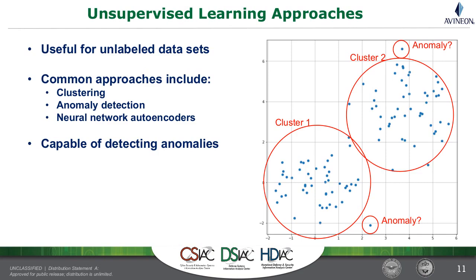Unsupervised learning approaches are useful when you have unlabeled datasets — meaning we're not going to tell it 'here's an attack' and 'here is not an attack.' If you had a lot of labeled data, you could use a supervised approach. We're going to use only unsupervised data, at least in the first phase. The common approaches are clustering and neural network autoencoders, which was the type of system we ended up using.